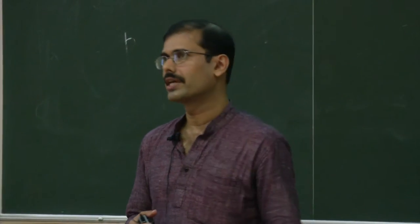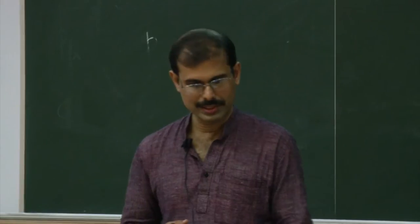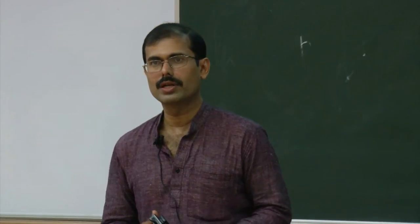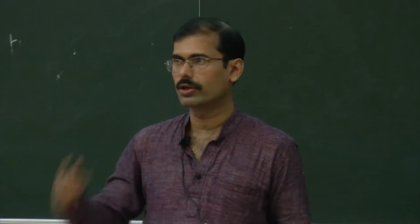When you write a loop, you must first be clear in your head what you want that loop to do. That is captured by preconditions and postconditions. The precondition is the relation between variables before the loop starts iterating. The postcondition is the relation between variables after the loop has completed all its iterations. The loop incrementally changes the relation from precondition to postcondition. The loop invariant is a relation that holds every time the loop iterates, and the precondition and postcondition can be seen as special cases of the loop invariant.